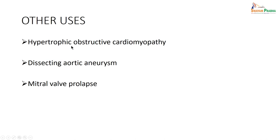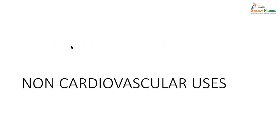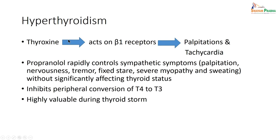Other cardiac uses of beta blockers include hypertrophic obstructive cardiomyopathy, dissecting aortic aneurysm, and mitral valve prolapse. Non-cardiovascular uses include hyperthyroidism, because thyroxine acts on beta-1 receptors, causing symptoms like anxiety, palpitation, and tachycardia.